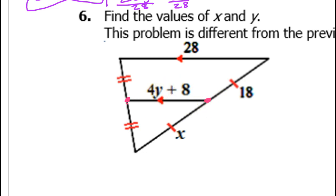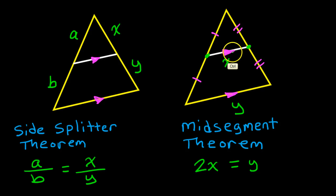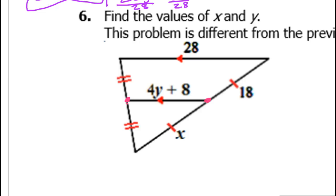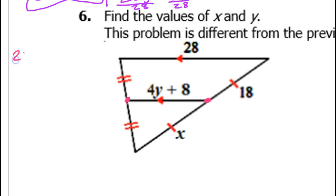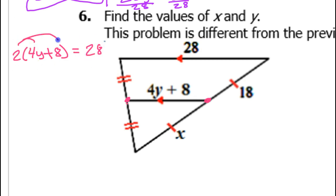The mid-segment is going to be half the length of the parallel side, so if I double the mid-segment it's going to equal the other side. If I do 2 times (4y plus 8), that should equal the parallel side of 28. Applying the distributive property: 8y plus 16 equals 28.